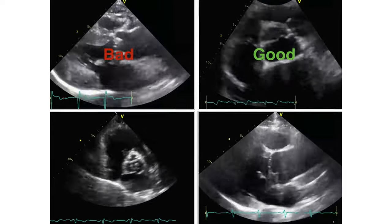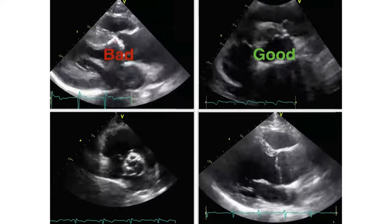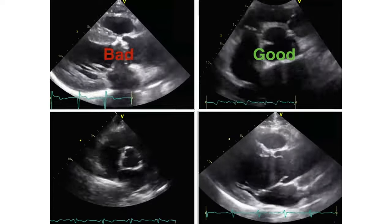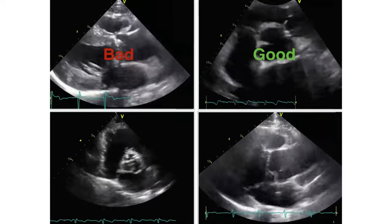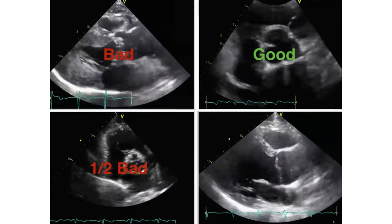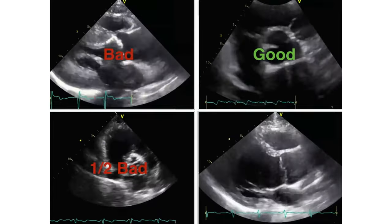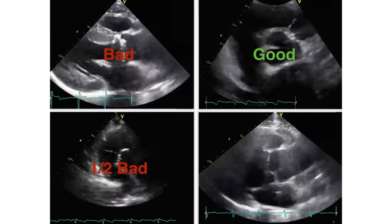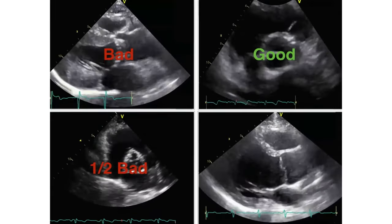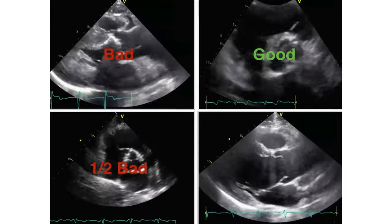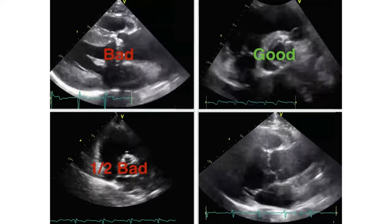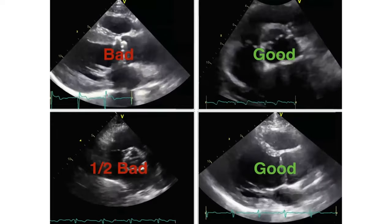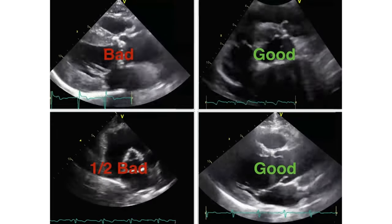The third one — I would say this is half bad because it's calcified; it's a rigid valve but still opens. And the last one is a normal valve, we can say it's good.